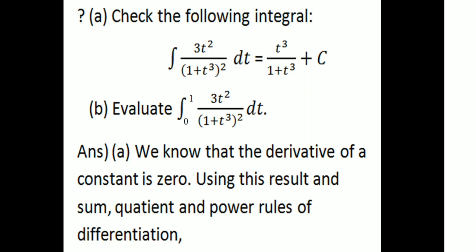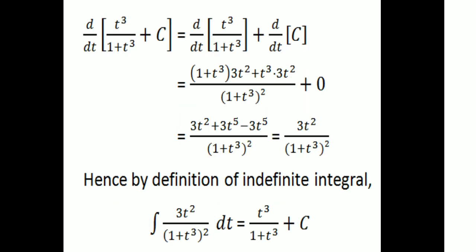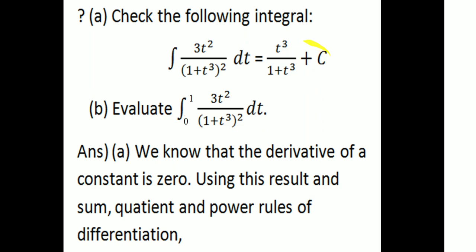We know that the derivative of a constant is zero. Using this result along with the sum rule, quotient rule, and power rule for differentiation, we can verify the integral. We use constant terms whose derivative is zero, and apply these rules to calculate the result.